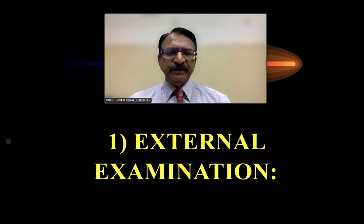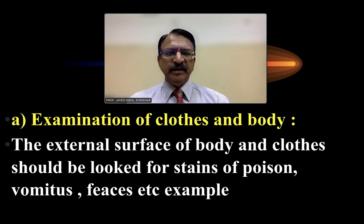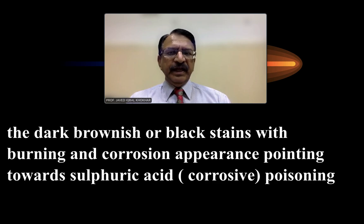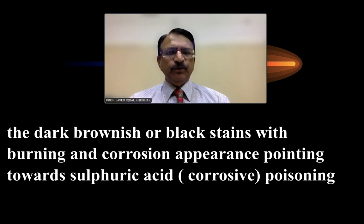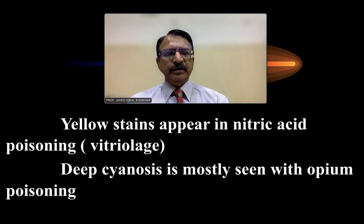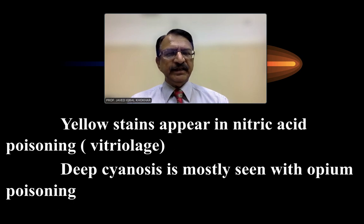On post-mortem external examination, the external surface of the body and clothes should be carefully examined for stains of poison, vomitus, or feces. Dark brown or black stains with burning and corrosive appearance point toward sulfuric acid or corrosive poisoning. Yellow staining may indicate nitric acid poisoning. Deep cyanosis is mostly seen in opium poisoning.